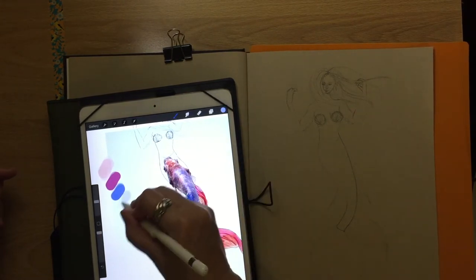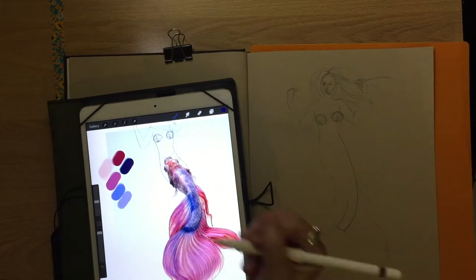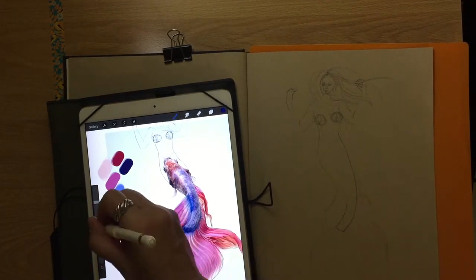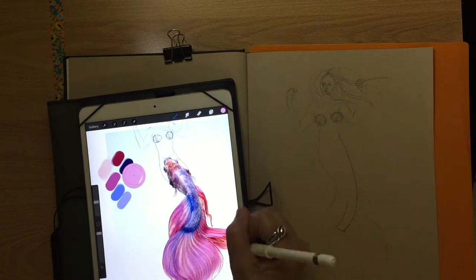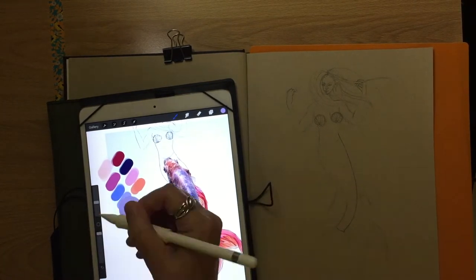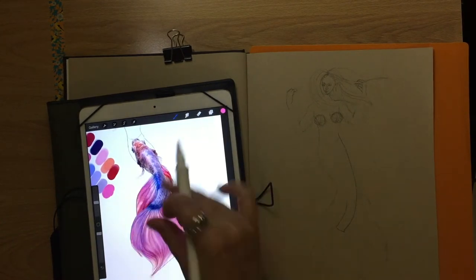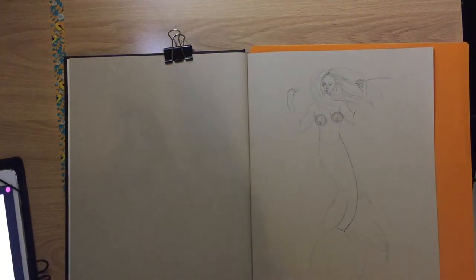So right here, this is the reference photo I use that fish right there. So I'm using my iPad and Procreate to do color picking, the colors from the fish so that when I do my drawing, I will know which of my colored pencils that I need to use.